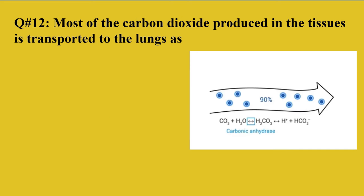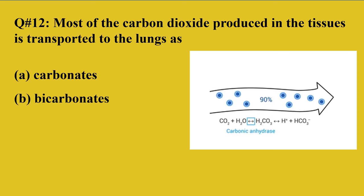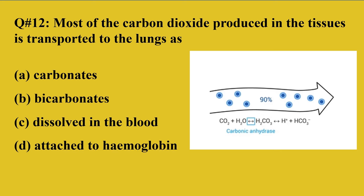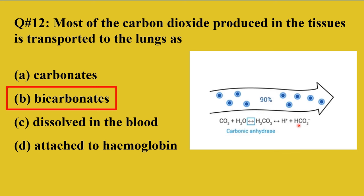Question number 12: Most of the carbon dioxide produced in the tissues is transported to the lungs as A: carbonates, B: bicarbonates, C: dissolved in the blood, D: attached to hemoglobin. Carbon dioxide is a waste product eliminated through the lungs. It is transported in the form of bicarbonates — carbon dioxide combines with water inside red blood cells, and the enzyme carbonic anhydrase forms carbonic acid, which dissociates into hydrogen ions and bicarbonate ions. About 90% of carbon dioxide is transported to the lungs in this bicarbonate form.